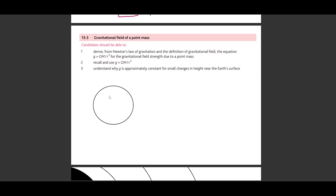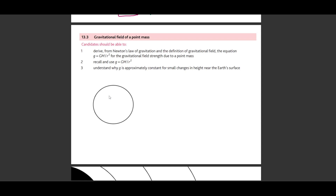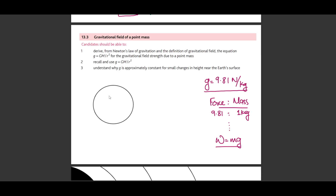The fifth topic is gravitational field strength of a point mass. A gravitational field — like any field concept — describes how much force is exerted per unit of the relevant quantity. On Earth's surface, gravitational field strength g = 9.81 N/kg. This means the Earth exerts 9.81 N of force for every 1 kg of mass. If the mass were 2 kg, the force doubles — this leads to the formula W = mg.